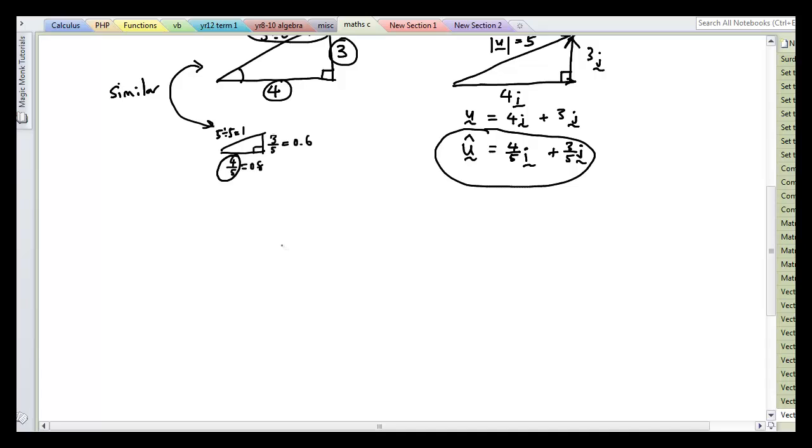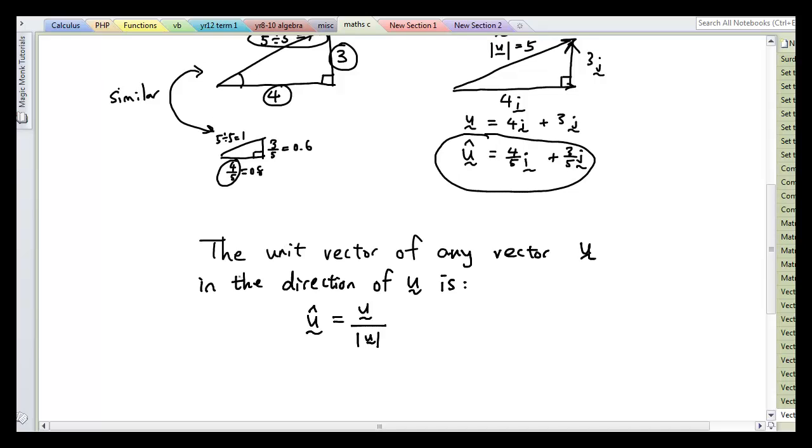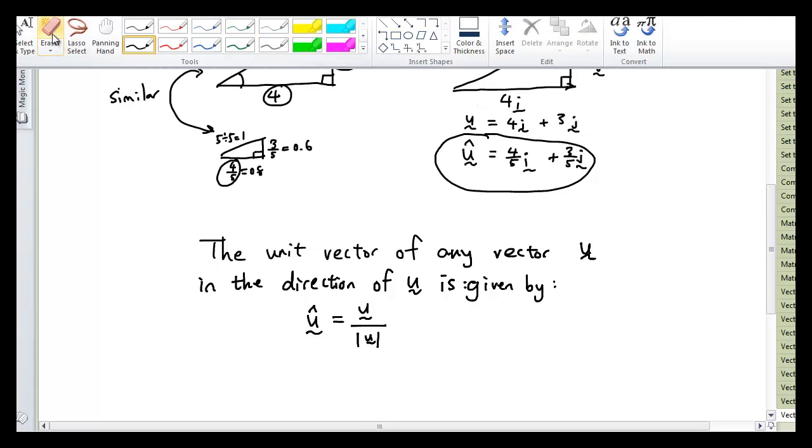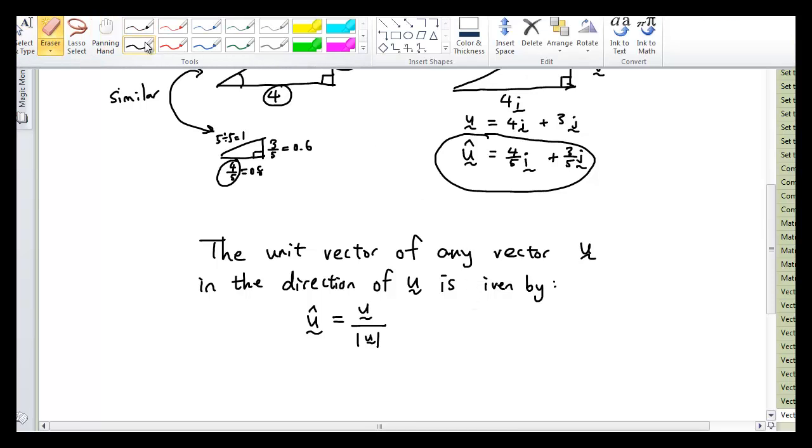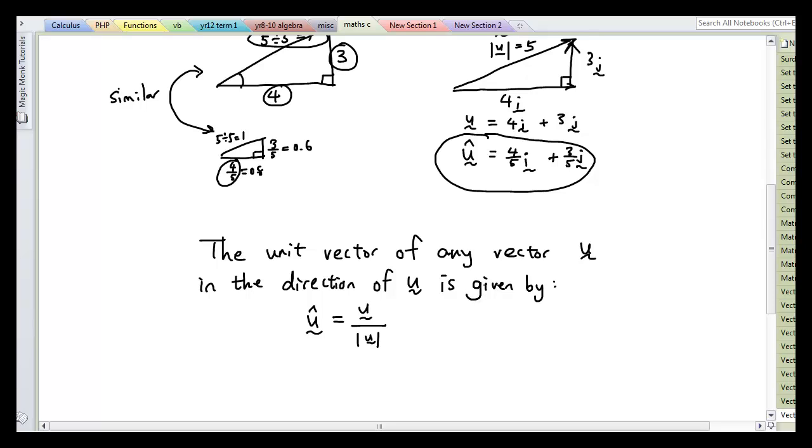Okay, so let's give you guys the general formula. The unit vector of any vector u in the direction of vector u is given by: the unit vector û is equal to vector u divided by the magnitude of u. So let's try this question.